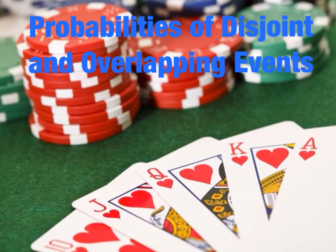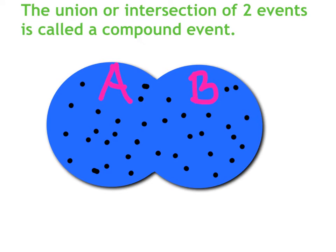Hey guys, this is Mrs. Future. This video is over probabilities of disjoint and overlapping events. We're going to start with the union or intersection of two events. It's called the compound event.